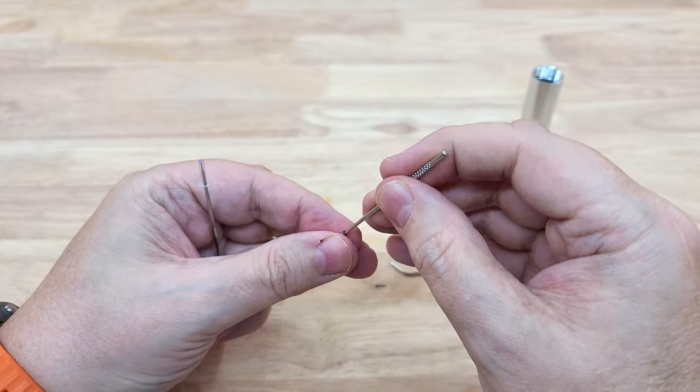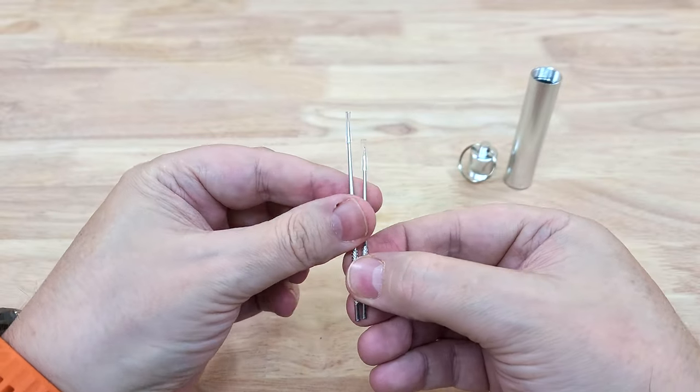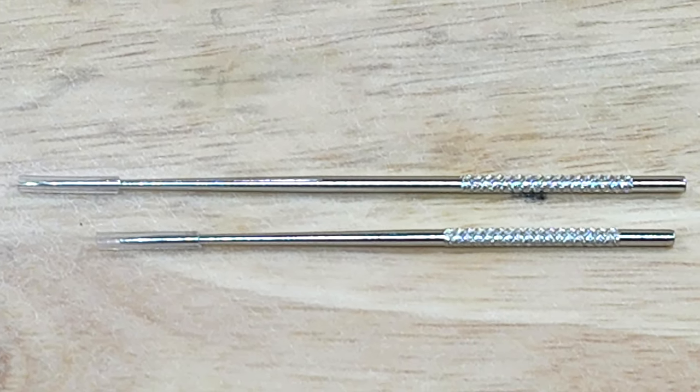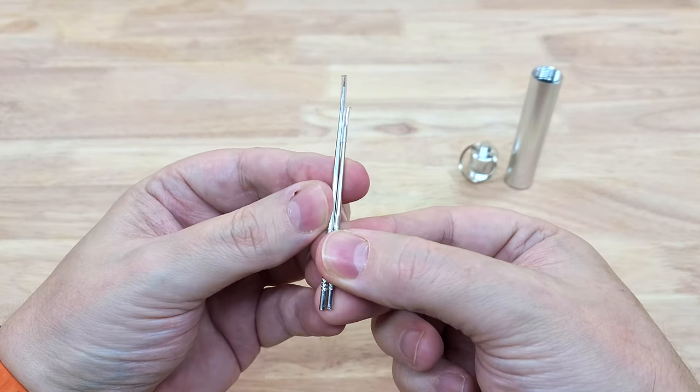Right, so we've got like a needle point there, and again there's a longer one and a shorter one. I'm guessing that the longer one is for using outside your mouth, and the shorter one is when you're using it from the inside.